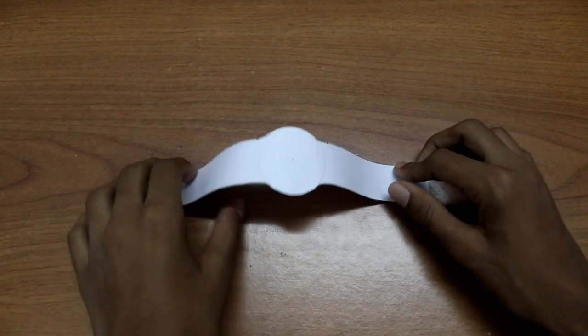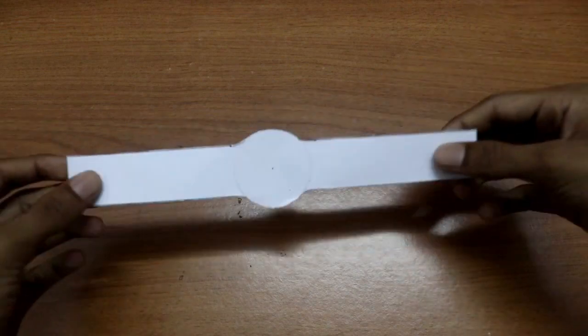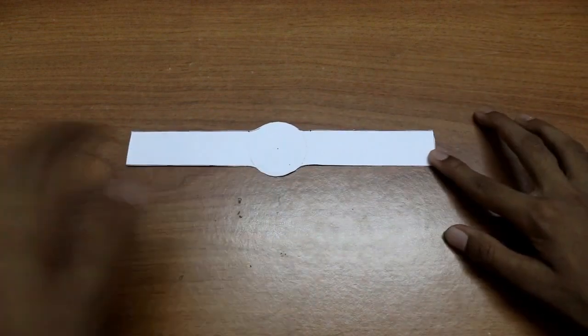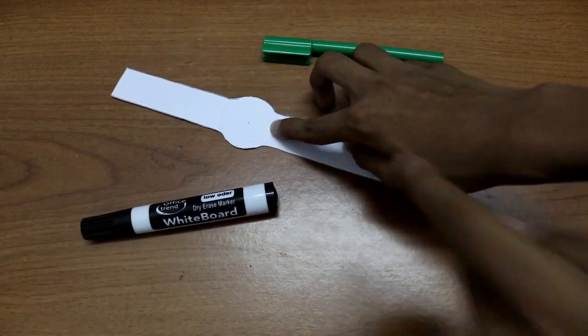After we are done cutting, we'll get a shape like this. It's the watch and you can see it exactly fits my hand, so you can measure according to your hand. Then you have to draw the lines for coloring.